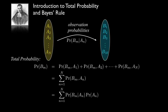This gives us a very important relationship for total probability. The probability of any observation occurring can be obtained by summing over all underlying events the product of the prior probabilities with the conditional observation probabilities.